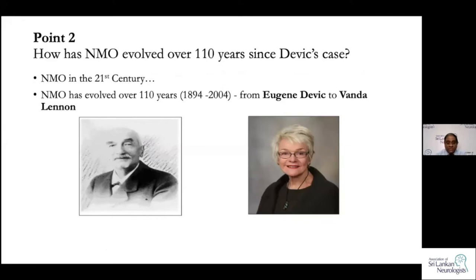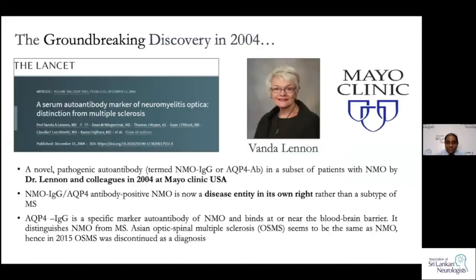Over the last 110 years, Devic's disease has evolved a lot. Today we know this condition as a totally different thing from what we knew earlier. Especially after 2004, when in the US, Vanda Lennon and her team made the groundbreaking discovery of a serum autoantibody — aquaporin-4 antibody, or NMO antibody — which is a marker for neuromyelitis optica. This was confirmed in 2004.